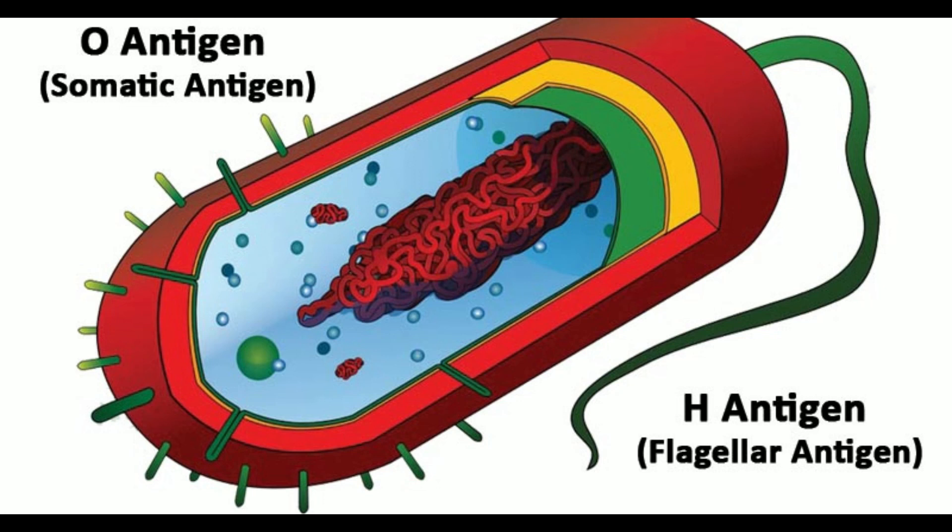Point 20: Widal test — in the Widal test, O antigen of Salmonella typhi is used; in the Widal test, H antigens of S. Typhi are also used. Point 21: Use in classification — serogrouping of Salmonella is based on O antigen; serogroups are further differentiated into serotypes based on H antigen.